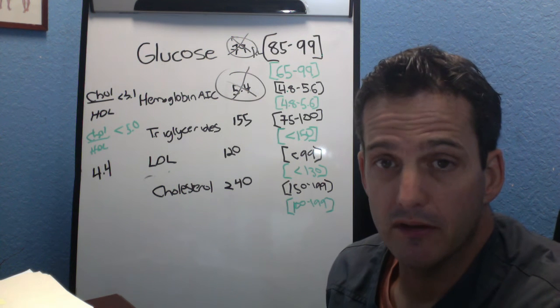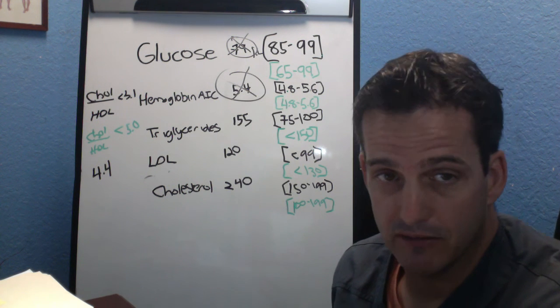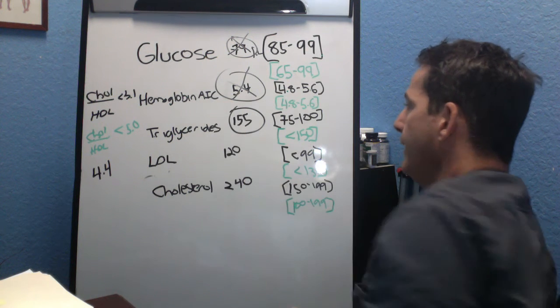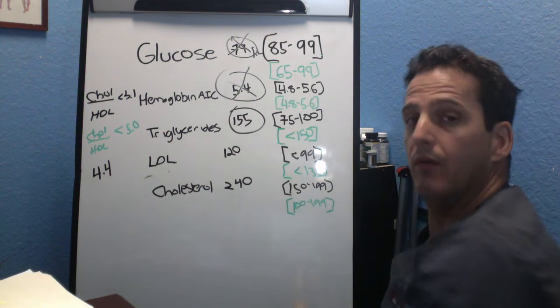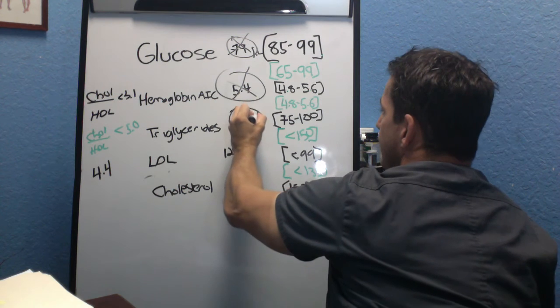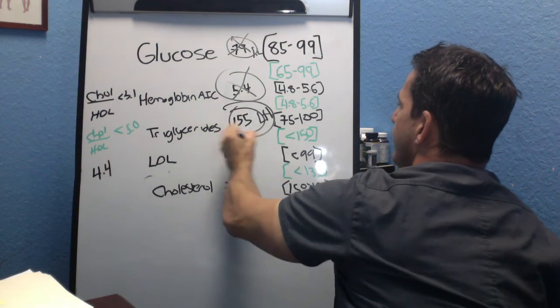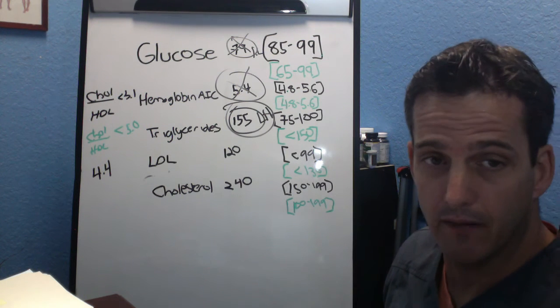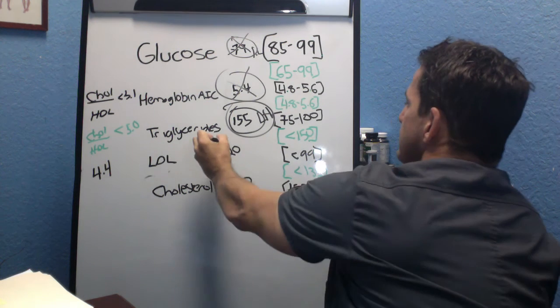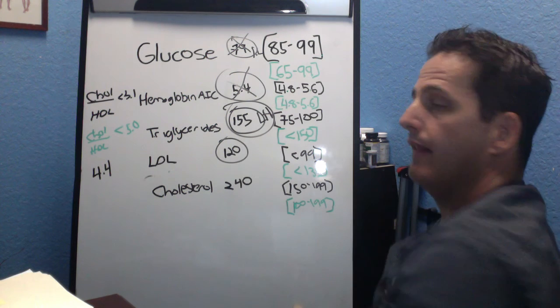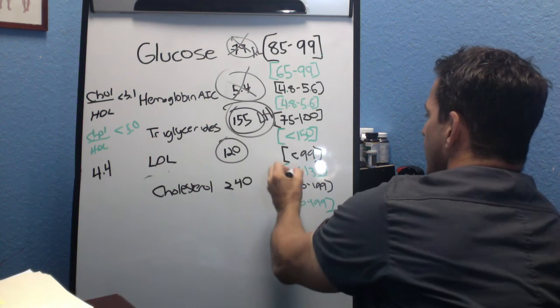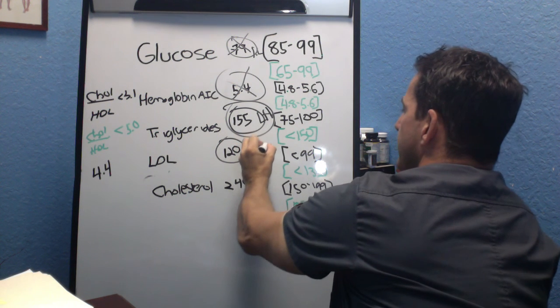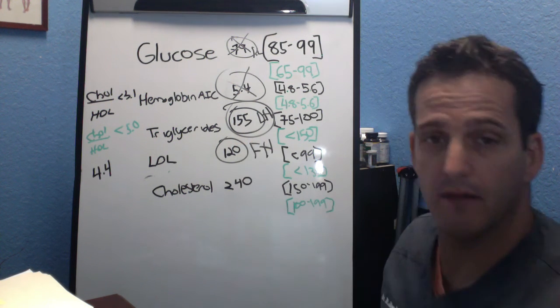Where we can get some more information is by looking at their fatty acid levels. So for example triglycerides were 155 and from a lab range they should be lower than 150. So he was actually laboratory high. From a healthy range 75 to 100. So that one was actually flagged on the test. LDL's 120. From a lab range it should be lower than 130. So that wasn't flagged. However from a healthy range it should be lower than 99. So that was functionally high.